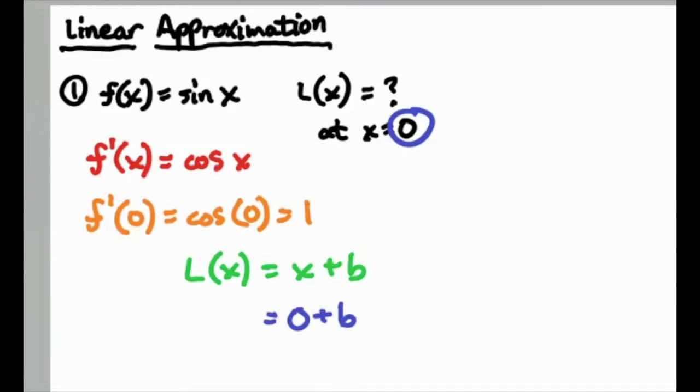And you need to figure out what's the y when x equals 0. Well, when x equals 0, here's our y equation. Right, f of x is just a fancy way of writing y. So plug in 0 to this and you get 0. So you end up with b is equal to 0, so your final answer, your approximation, should be l of x is equal to x.